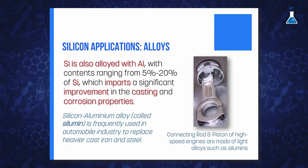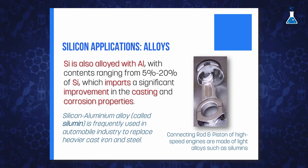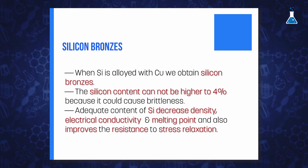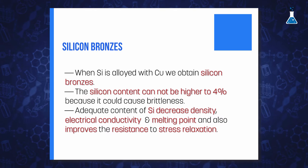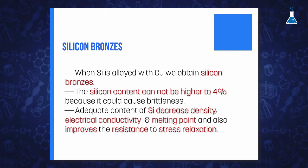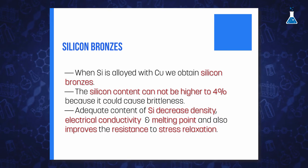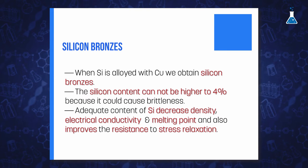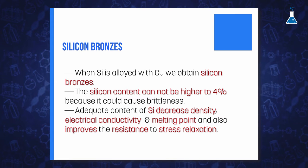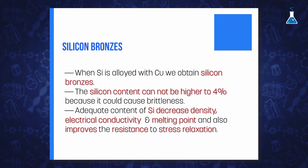Silicon is also alloyed with aluminum in proportions ranging between 5 and 20% silicon, which imparts a significant improvement in casting and corrosion properties. Silicon may also be alloyed with copper to obtain silicon bronzes with a silicon content of up to 4%. A higher silicon content is unfavorable because it increases brittleness, while inadequate proportions decrease density, electrical conductivity, and the melting point of the alloy, though it also improves resistance to stress relaxation.